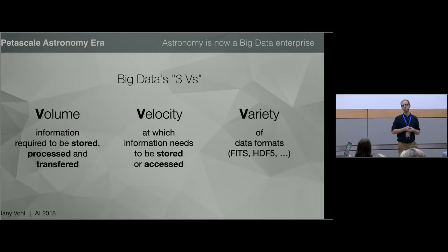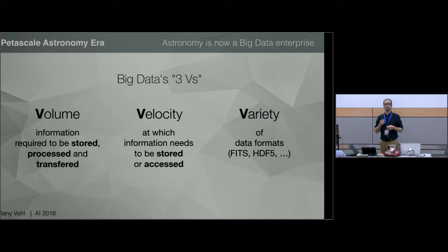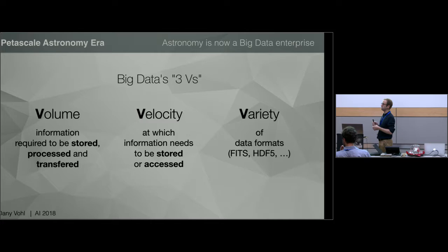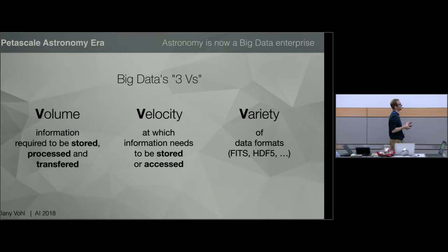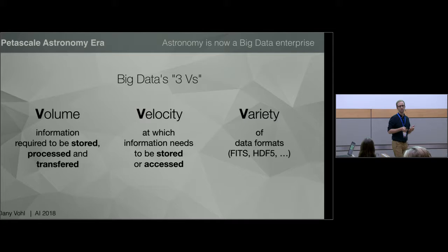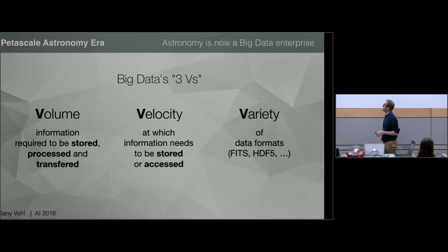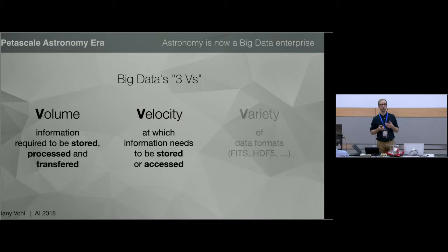Problems come when we need to store, access, or transfer this data. Velocity is the speed at which data is being created, deleted, accessed, or transferred — this has impacts when you do things like time domain astronomy. Variety, in general in astronomy, is not as much of a problem; we usually deal with only a few data formats like FITS or HDF5. But the other two have a serious impact that we need to address.